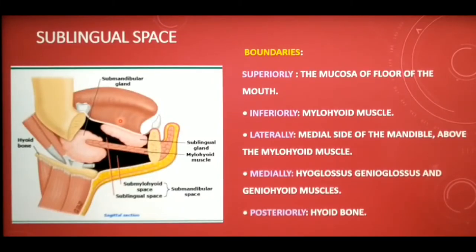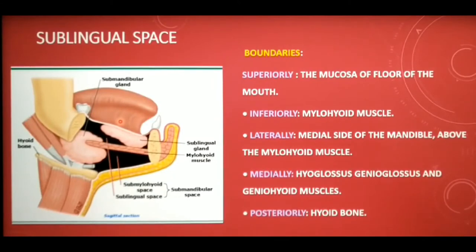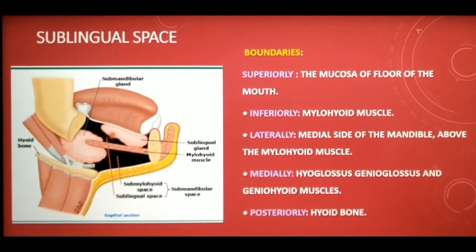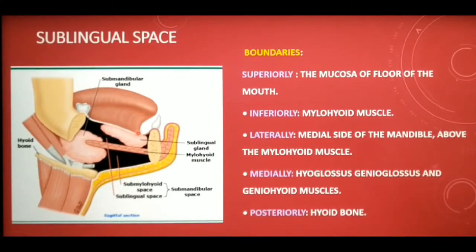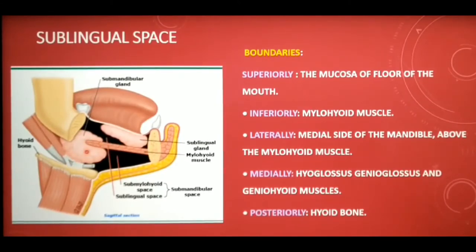The next potential primary space associated with the mandible is the sublingual space. This space is V-shaped and lies lateral to the muscles of the tongue. The teeth most frequently involved in sublingual space infection are the mandibular incisors, canines, premolars and sometimes the first molars, as their root apices are superior to the mylohyoid muscle. When root apices extend beyond the mylohyoid muscle, infection spreads into the submandibular space.